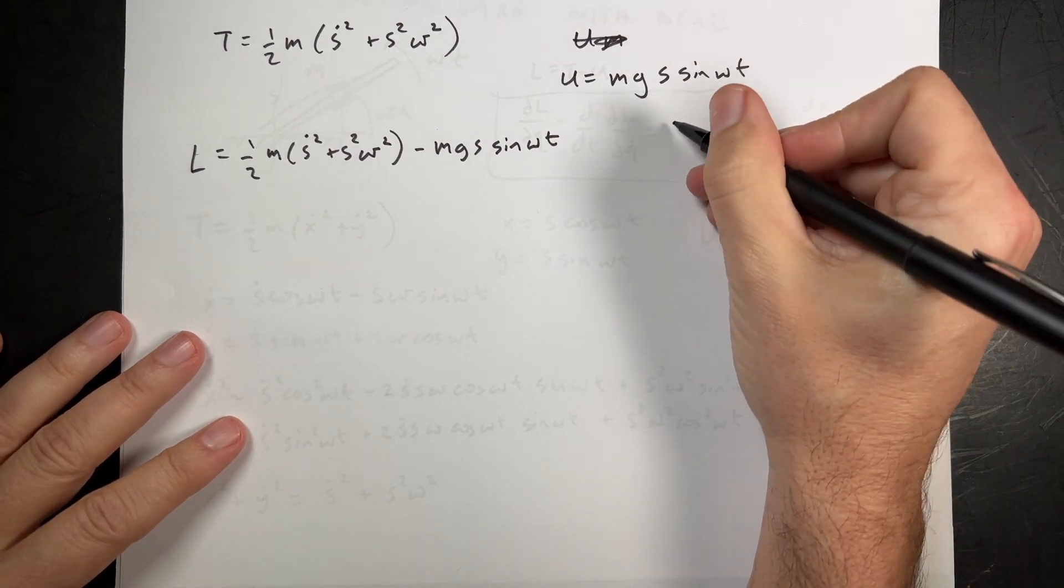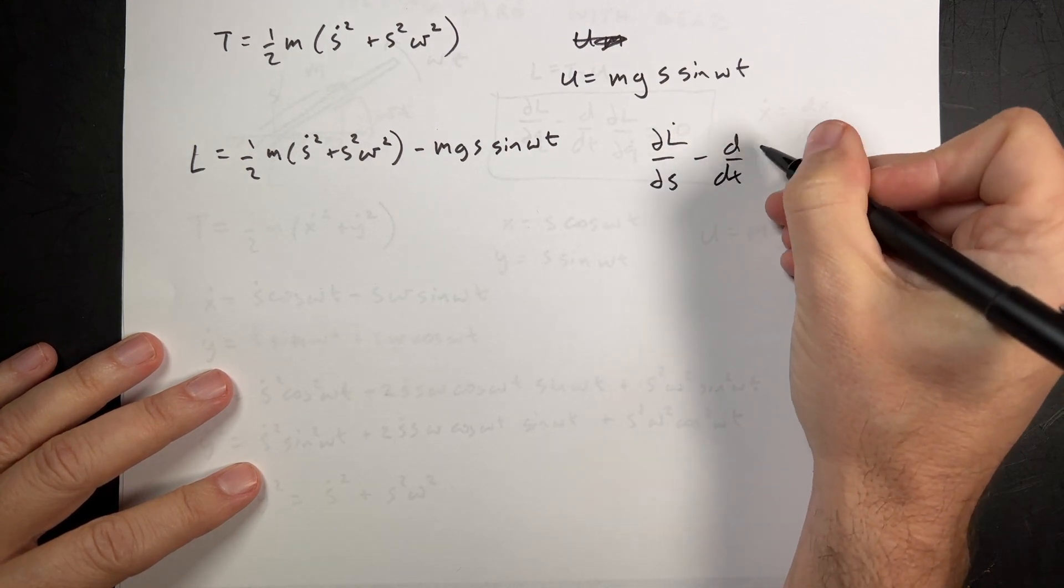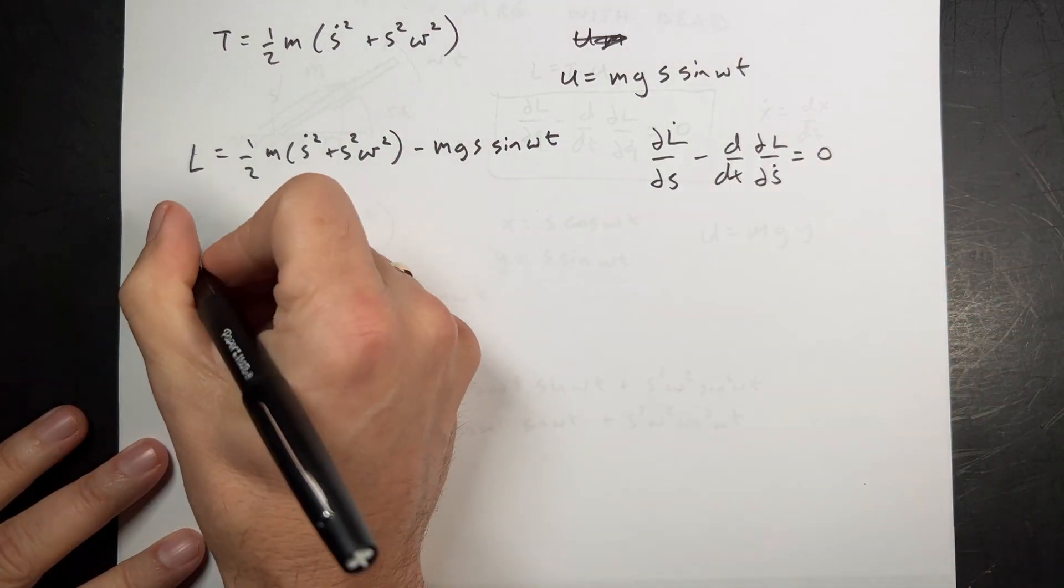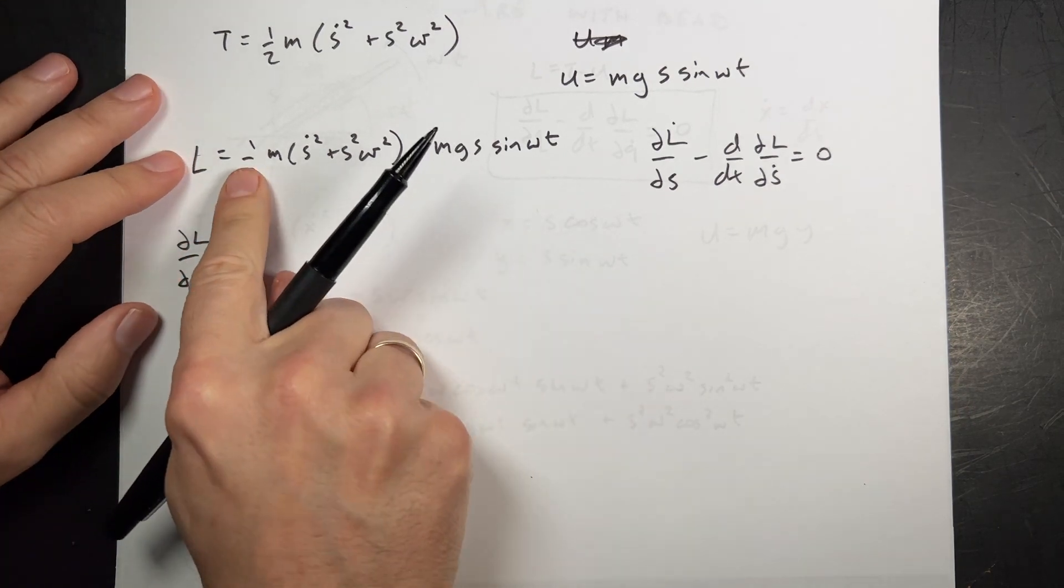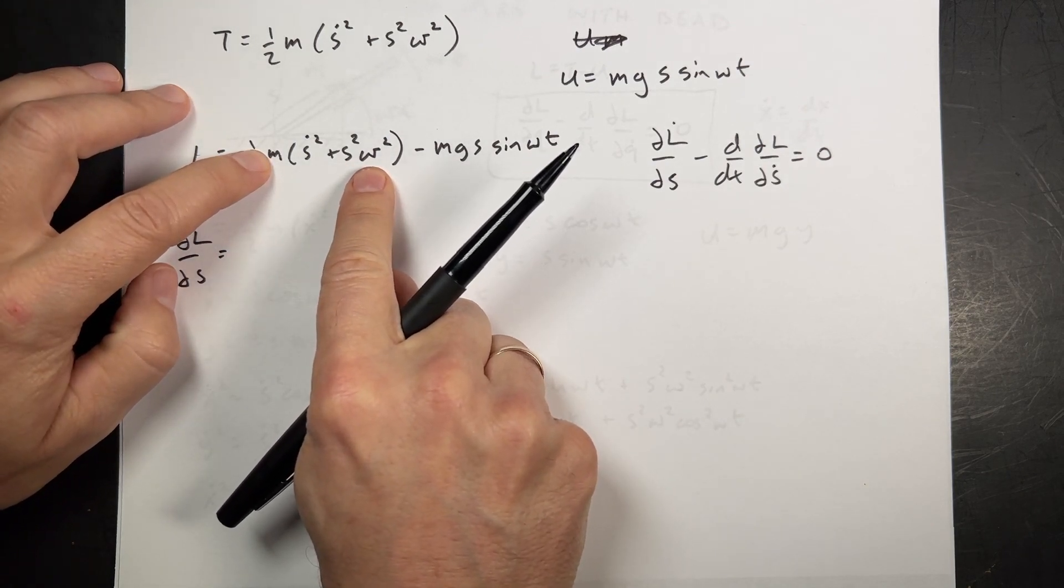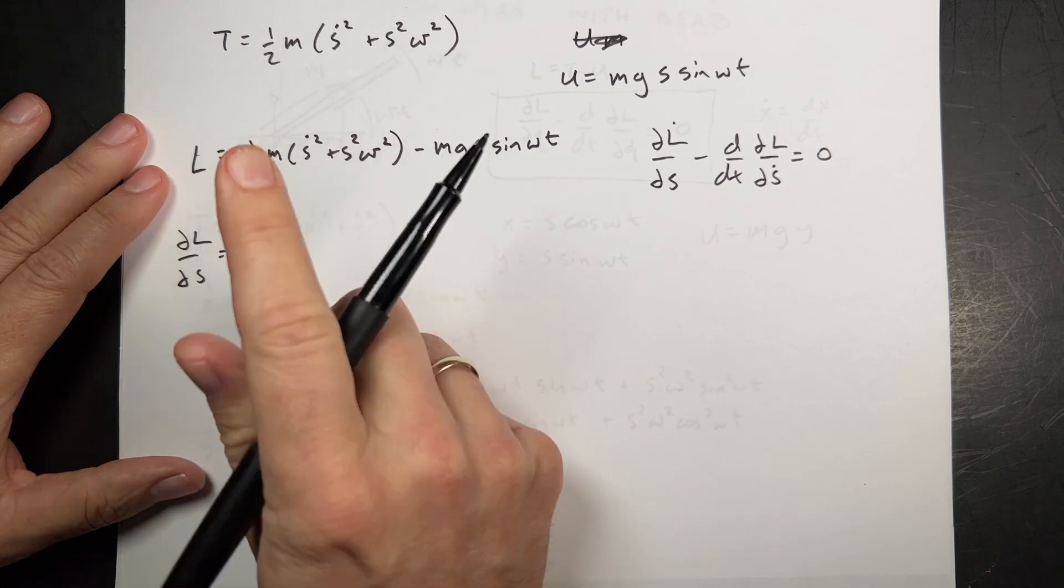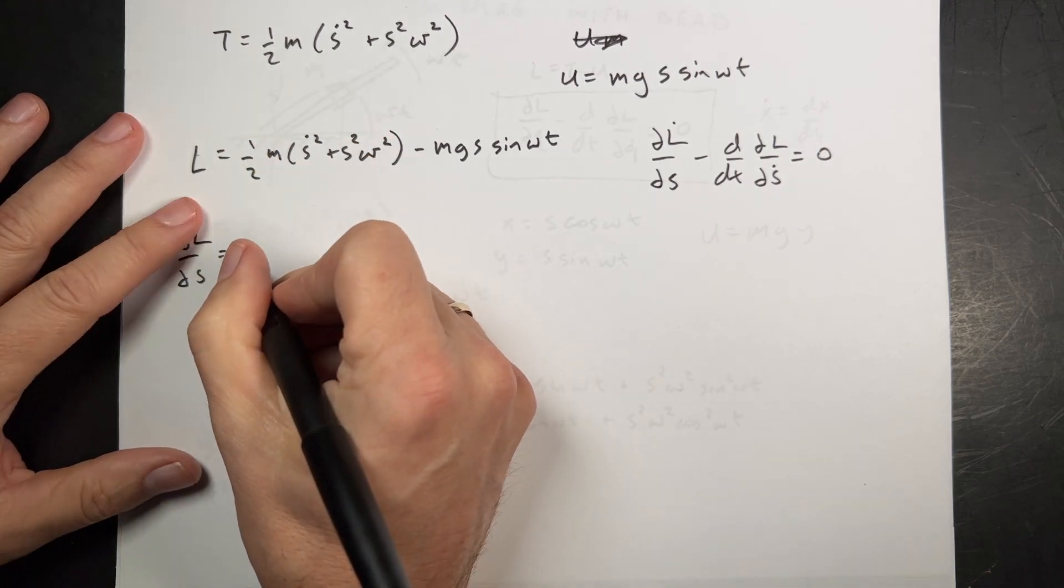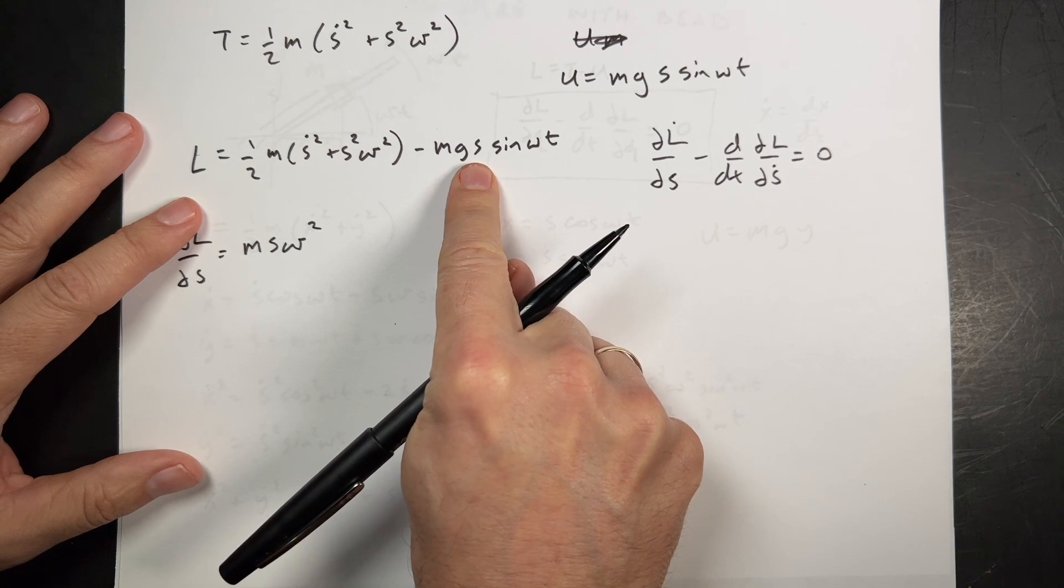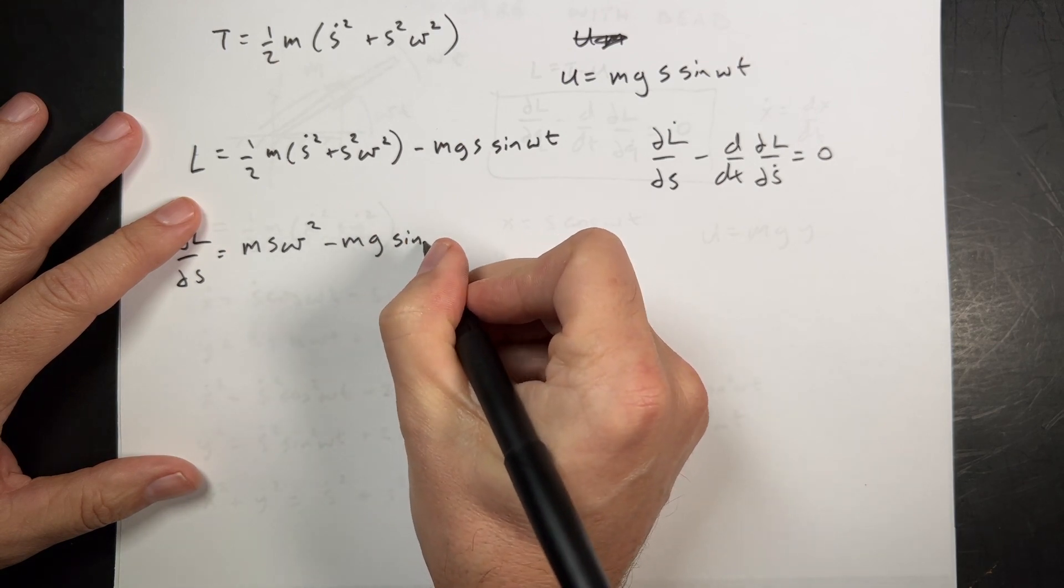U is equal to m times g times y which is s sine omega t. So now I can write down my Lagrangian. Let's just check. Does this have the correct units? It doesn't actually have to have units of kinetic energy. But it does. So I have s dot. That's a velocity. A position velocity. So that's meters per second squared. Meter squared per second squared. Here I get meters squared and then radians squared per second squared. So I get meter squared per second squared there. And then this has units of mgy. So that is units of energy too. So L is one half m times s dot squared plus s squared omega squared minus m g s sine omega t.